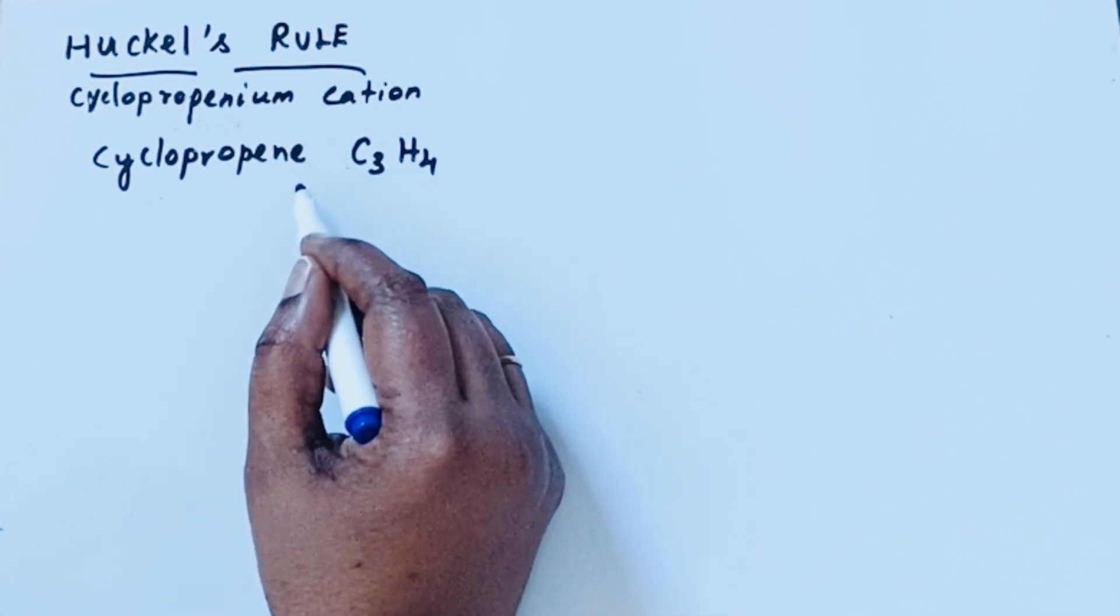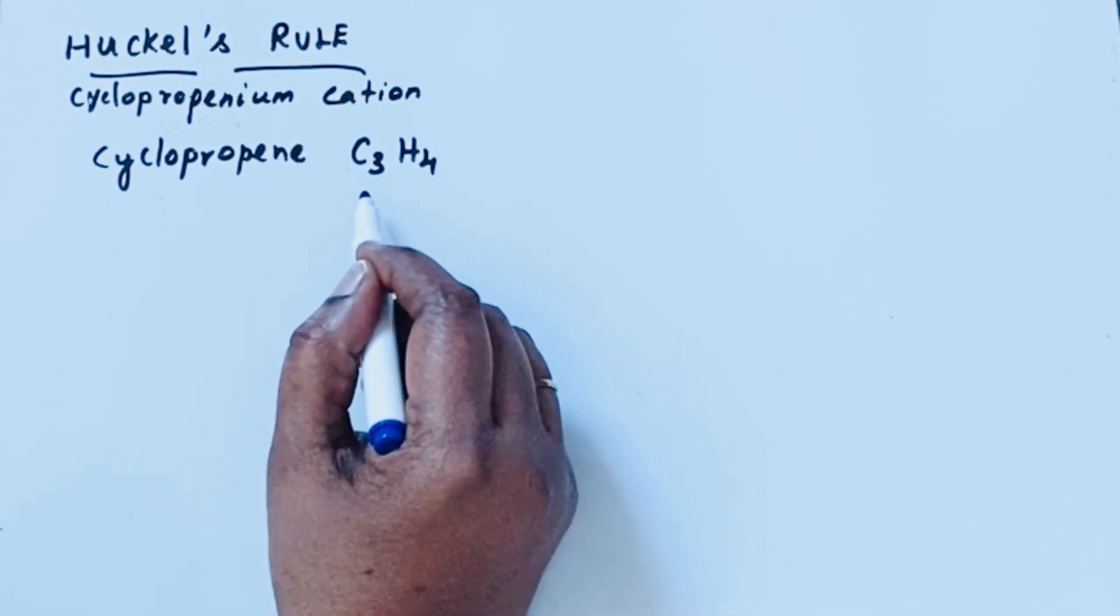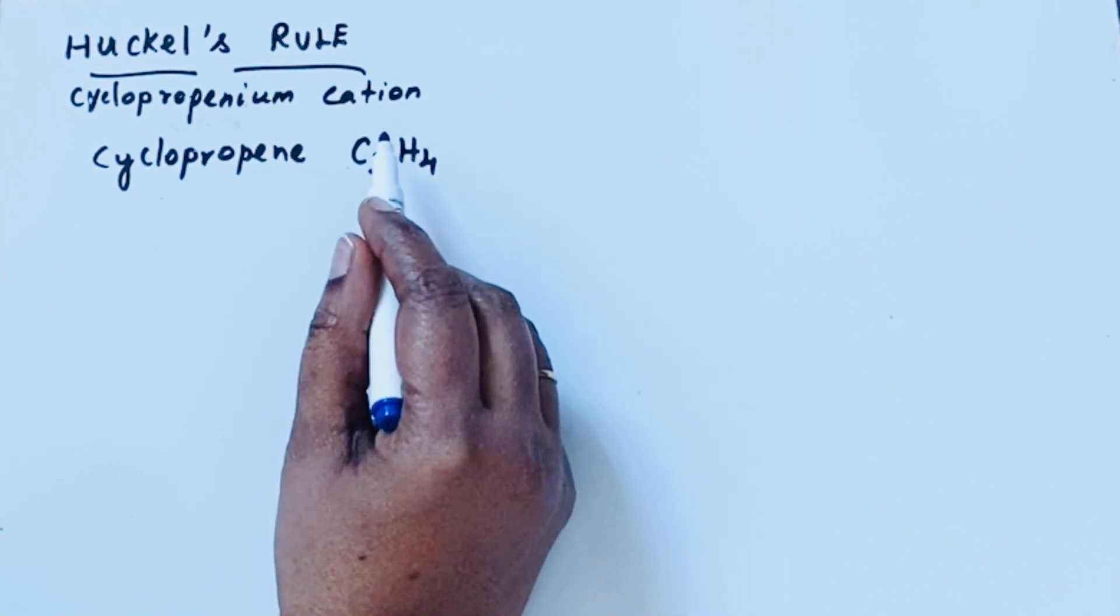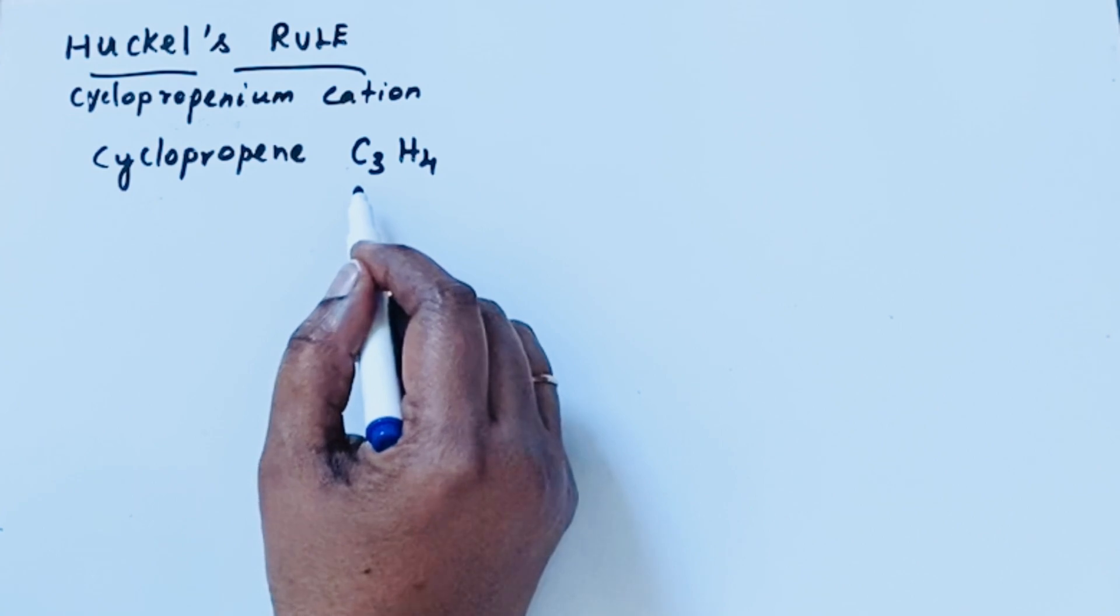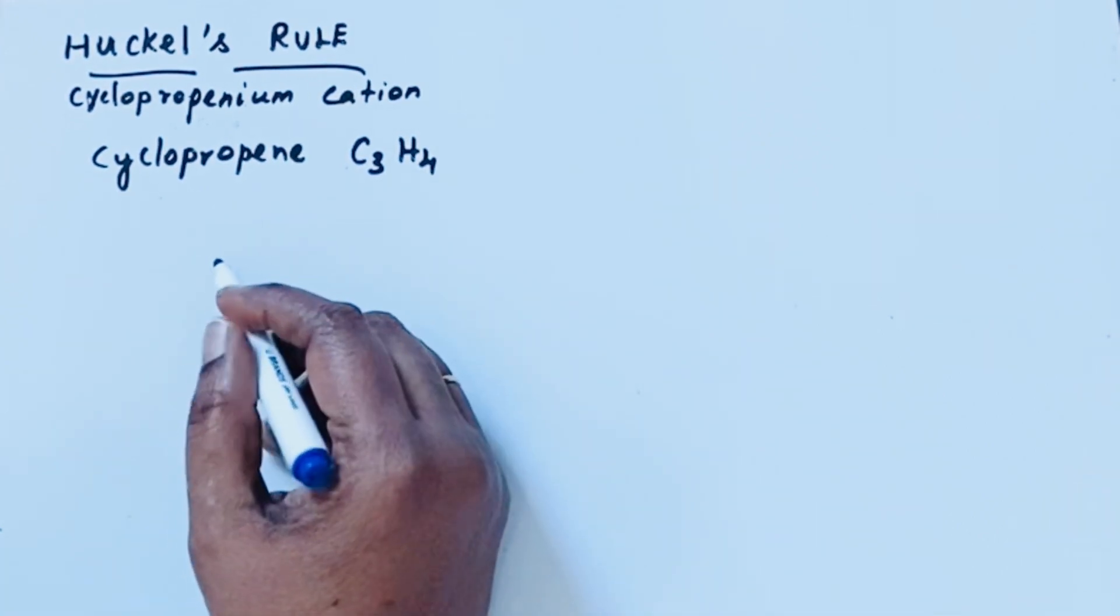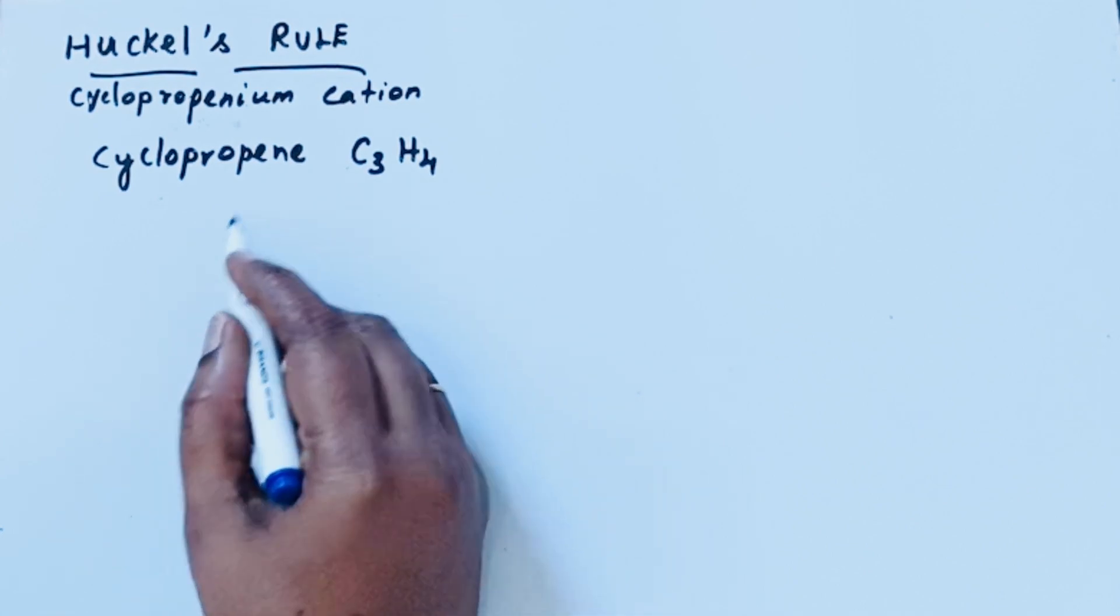Cyclopropenium cation is formed from cyclopropene, its molecular formula C3H4. Ions are formed whenever a molecule loses or gains an electron. So let us see how this compound cyclopropene is formed.